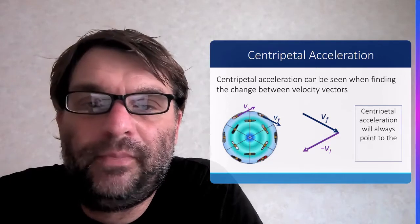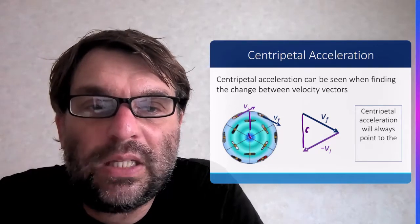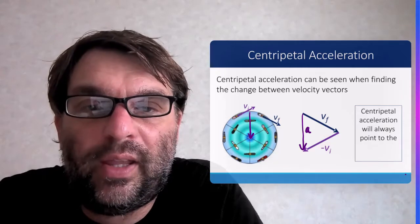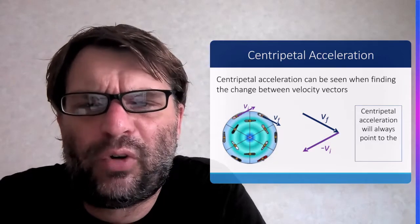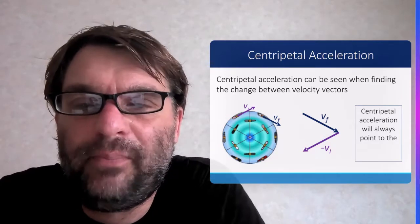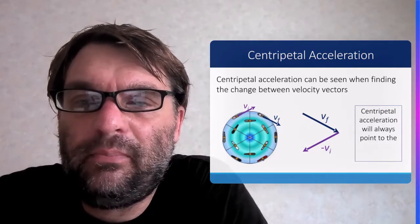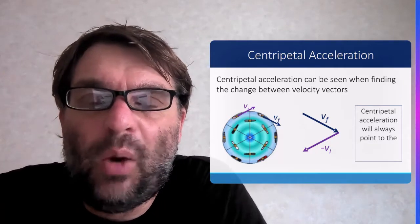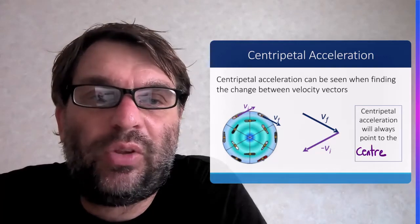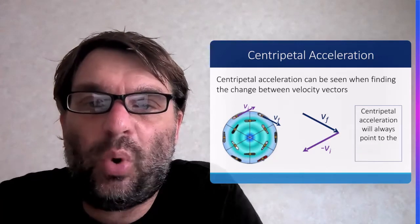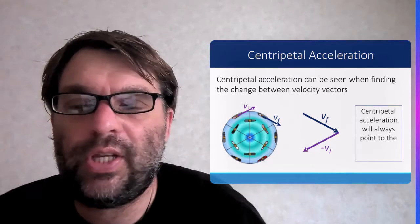So if you do the vector, you will see at least for the point on the carousel, getting my theme park rides confused, will be towards the center. The acceleration is always pointing towards the center.